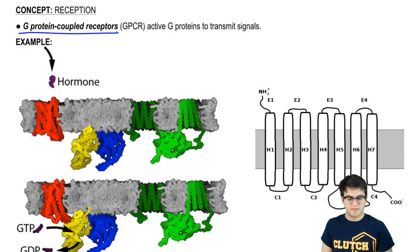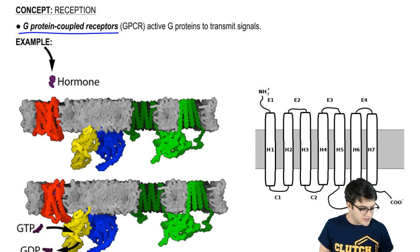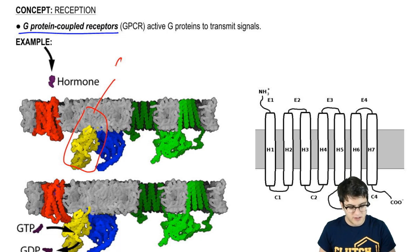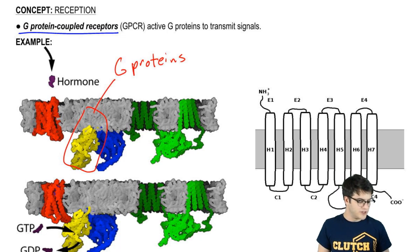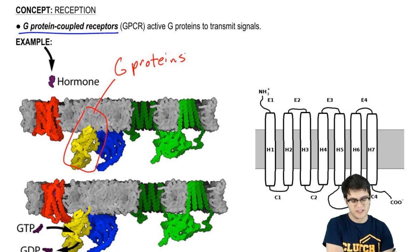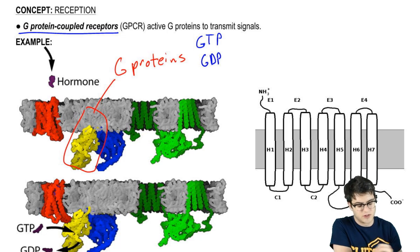G-protein-coupled receptors are transmembrane protein receptors. The reason they're called G-protein-coupled receptors is because they work with these molecules called G-proteins, which are also proteins, as their name would imply. G-proteins are called G-proteins because they use GTP and GDP to work.